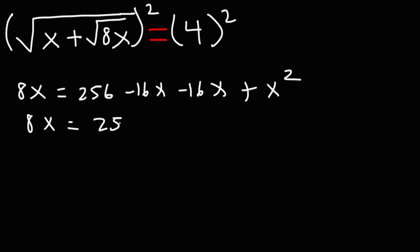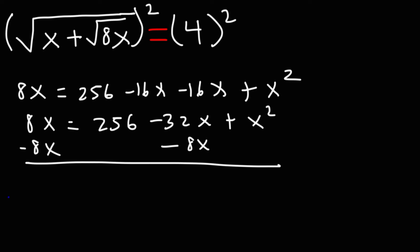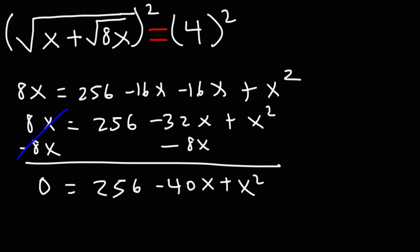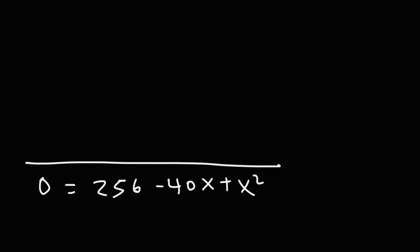Combining like terms, we have negative 16x minus 16x, that's going to be negative 32x. And then I'm going to subtract both sides by 8x. So I have 256, and negative 32 minus 8 is negative 40. I'm going to rewrite that in standard form: 0 is equal to x squared minus 40x plus 256.